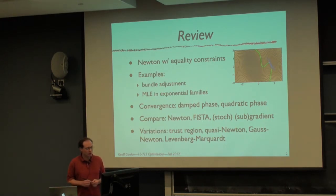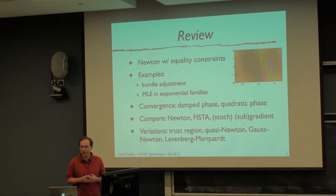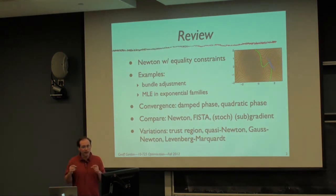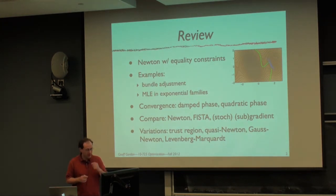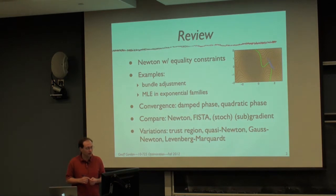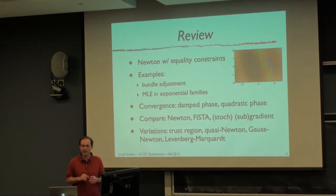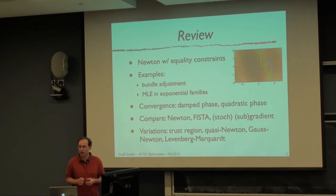We talked about the convergence of Newton's method. Typically there are two phases: the damped phase in which we're taking a step size less than one and reducing the function by a constant amount per step, and then the quadratically convergent phase where we're taking step size of one and essentially doubling the number of significant digits in our solution at every time step. We compared Newton, FISTA, and stochastic and deterministic gradient and subgradient. The take-home message is that they're good for different things.